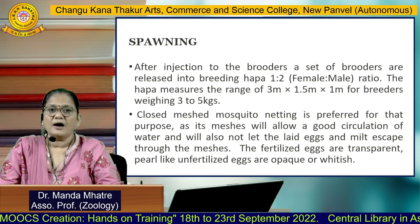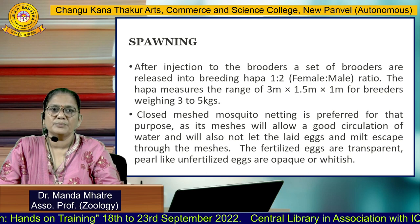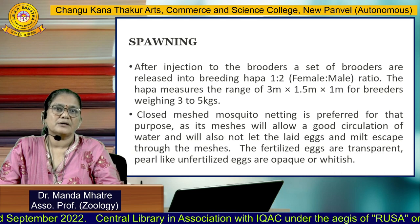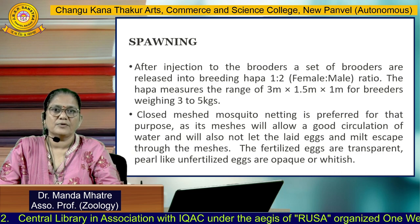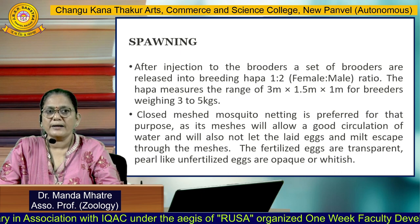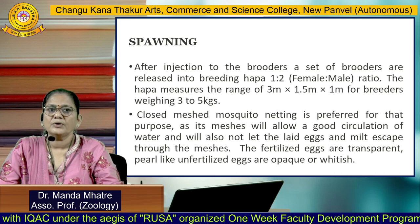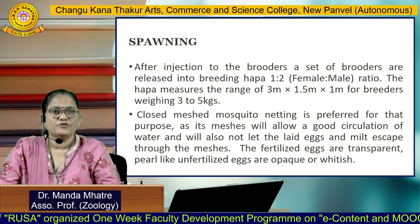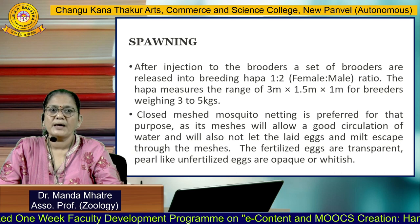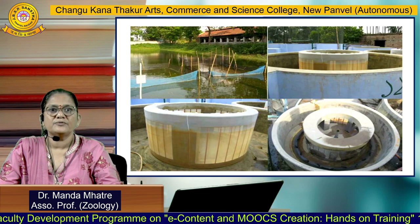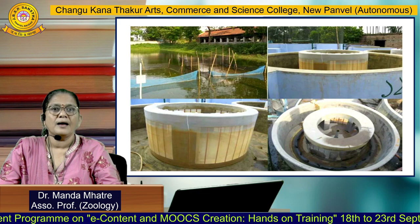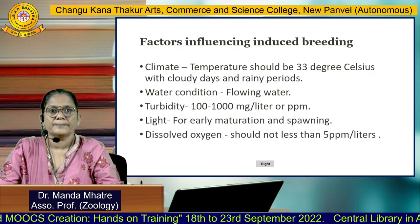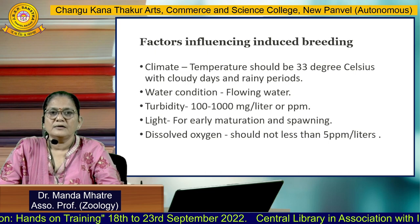After injection to the brooders, a set of brooders is released into a breeding happa — that is, 1 female and 2 males are added. The happa measures 3 meters by 1.5 meters by 1 meter for breeders weighing 3 to 5 kg. Close mesh mosquito netting is preferred as it allows good circulation of water and does not let the laid eggs escape through the meshes. Fertilized eggs are transparent and pearl-like, while unfertilized eggs are opaque or whitish. Modern hatchery techniques like Chinese and Indian hatcheries have also been developed.